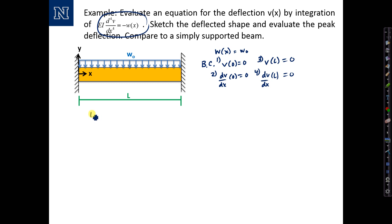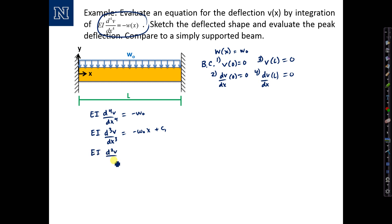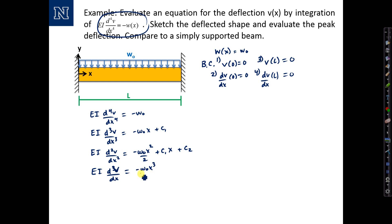Now let's integrate. EI times d⁴V/dx⁴ equals negative W-naught. Integrating once: EI times d³V/dx³ equals negative W-naught·x plus a constant of integration. Integrating again: EI times d²V/dx² equals negative W-naught·x²/2 plus C1·x plus C2. Integrating again: EI times dV/dx equals negative W-naught·x³/6 plus C1·x²/2 plus C2·x plus C3.